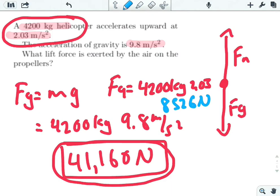To find the total force, we add the net force to the force due to gravity. That gives us the overall force exerted by the air on the propellers.